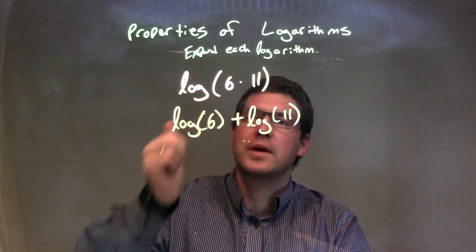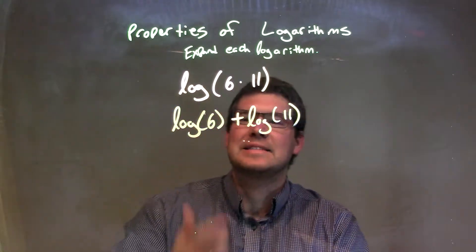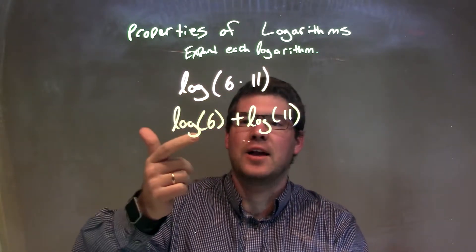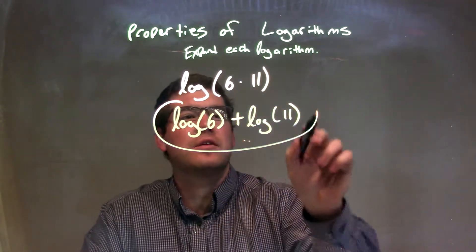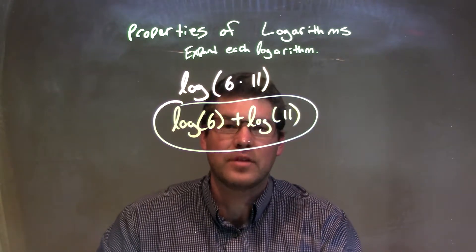When you see multiplication going on inside of a logarithm, it's the same thing as addition outside. You separate the two different logarithms, and that's it. Our final answer here is the log of 6 plus the log of 11.